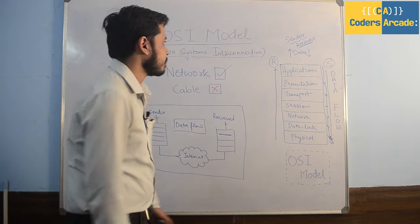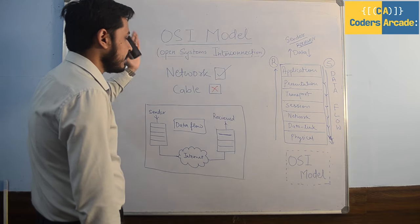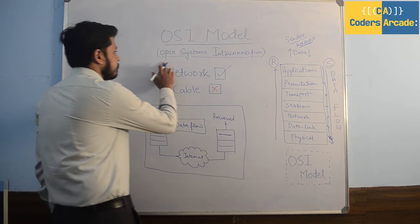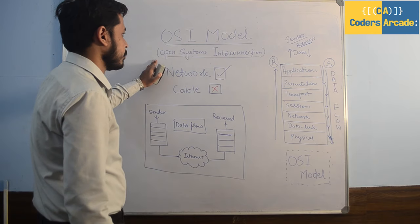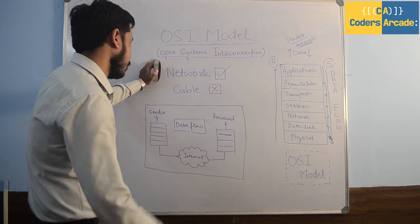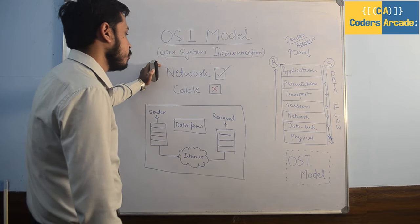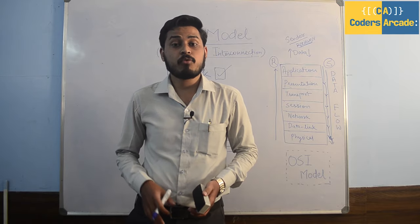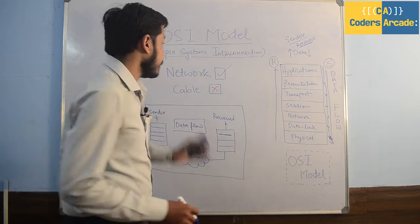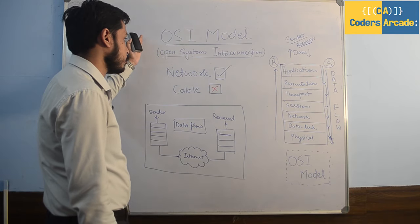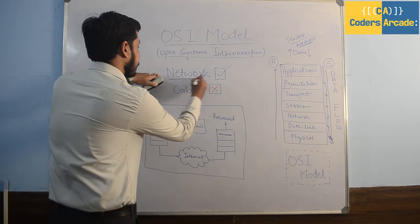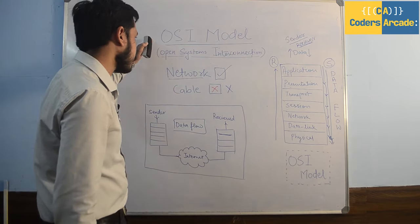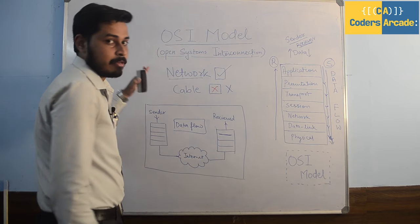So let us begin with the OSI model. The first thing that comes to mind is: what is the OSI model? The full form of OSI is Open Systems Interconnection. Basically, the OSI model is a tool used by IT professionals to model or trace the actual flow of data that is transferred in a network. The main thing to keep in mind is that OSI model only works in a network connection.